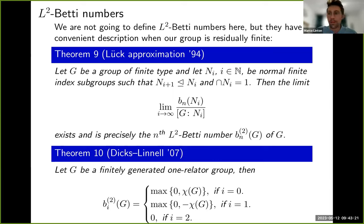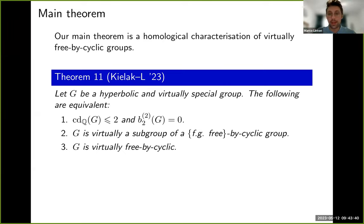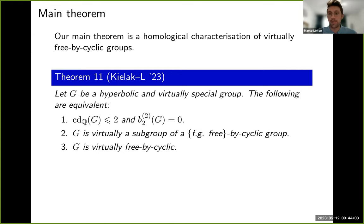Now we're ready to state the main theorem. Our main result is essentially a homological characterization of virtually free bicyclic groups. We assume G is hyperbolic and virtually special. Under this assumption, the following are equivalent: G has rational cohomological dimension at most two and the second L² Betti number vanishes; G is virtually free bicyclic; and G is virtually a subgroup of a finitely generated free bicyclic group. Combining with what I've mentioned: one-relator groups with torsion are all hyperbolic by Newman's spelling theorem.